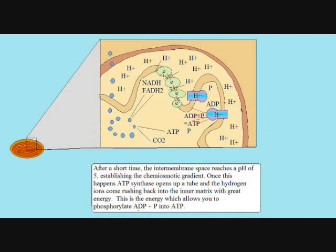The increase in hydrogen ions in the intermembrane space creates the chemiosmotic gradient, which is when the intermembrane space reaches a pH of 5, while the inner matrix maintains a pH of 7. When this happens, ATP synthase opens up a tube, and hydrogen ions come rushing back into the inner matrix with a great amount of energy. This energy is used to phosphorylate ADP and P in the inner matrix into ATP.